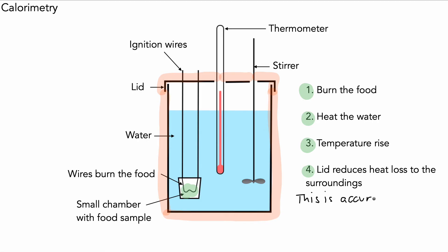This is a much more accurate method. There is little or no heat loss to the surroundings, so we get a better value for heat transfer, and that in turn will give us a better idea of the energy content of the food. Remember, this was called a calorimeter.